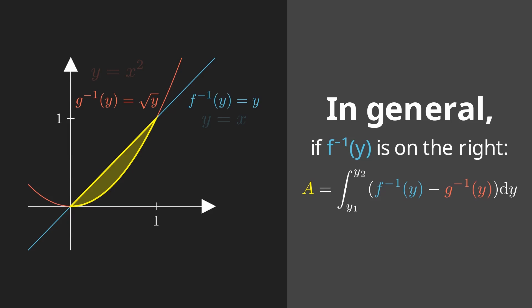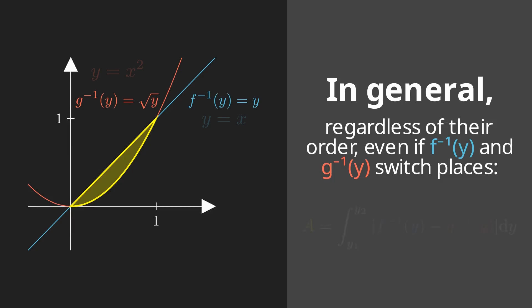So if the inverse function is on the right, that's going to be the quote unquote top function. And same for the case where g inverse of y is on top or on the right. And of course, the absolute value definition remains the same for this question.